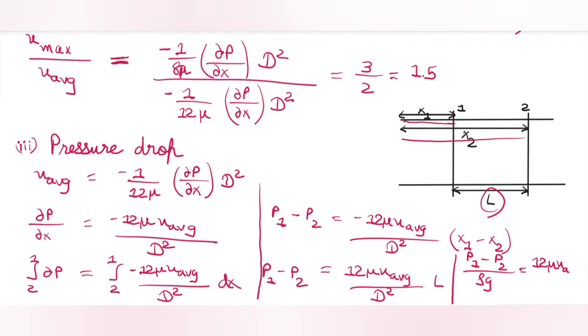Dividing both sides by ρg gives the equation for head loss: h_f = 12μU_avg·L / (ρg·D²).